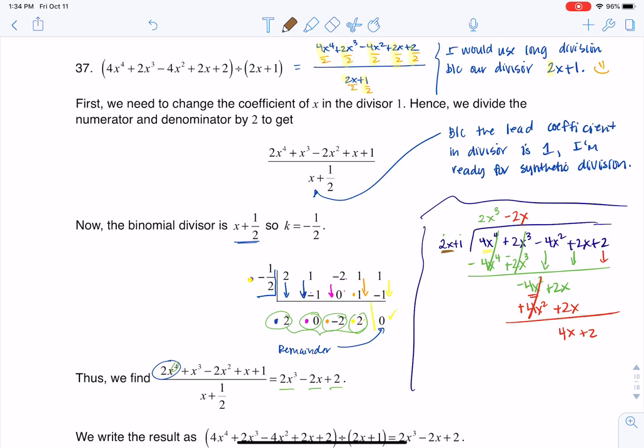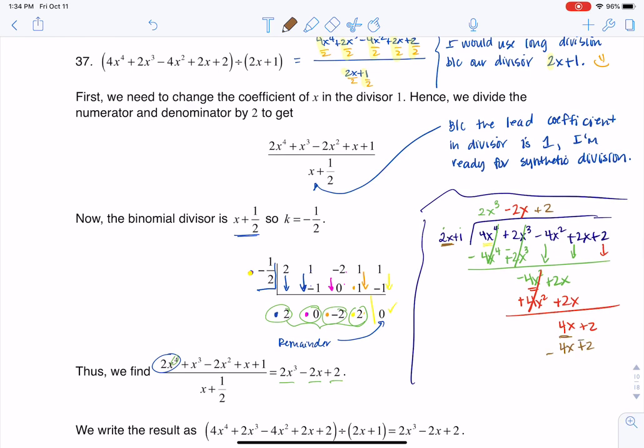What do I need to multiply 2x by to get to 4x? Well, that is just 2. This will become 4x plus 2. When I subtract everything out, sure enough, my remainder is 0.